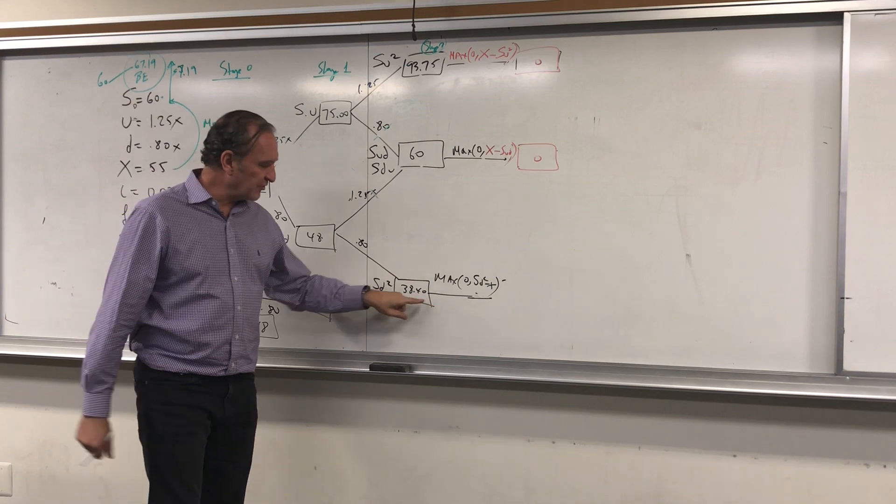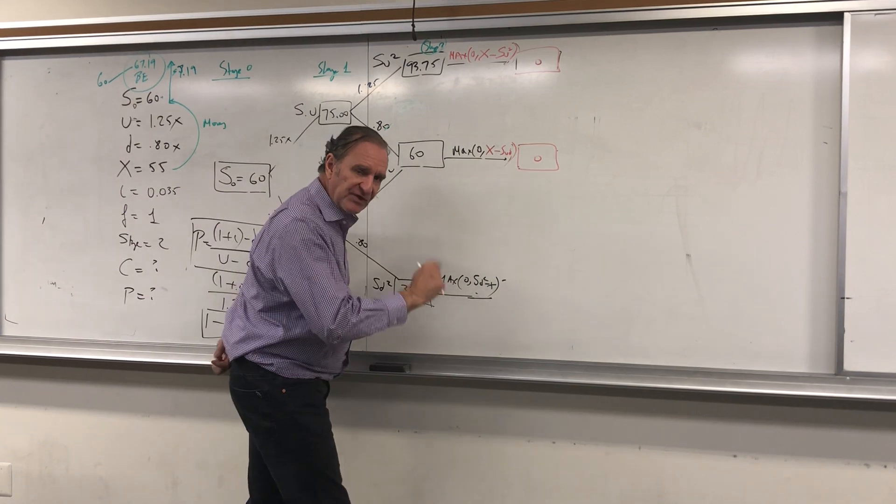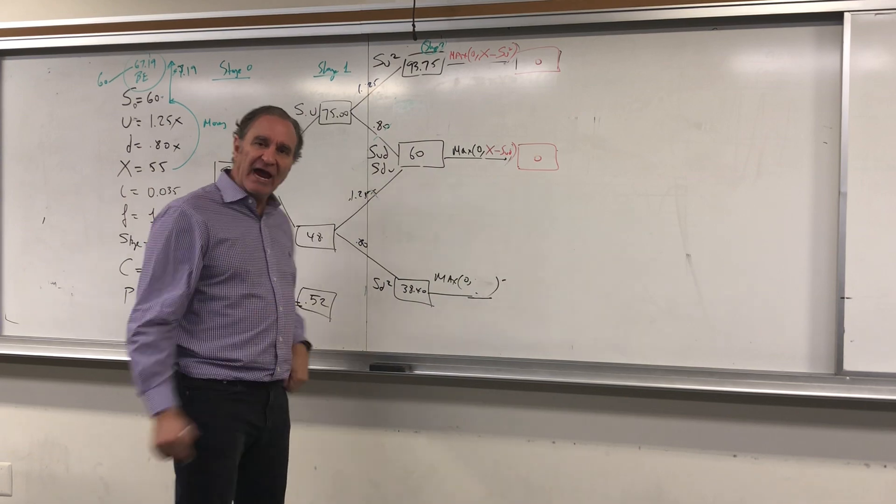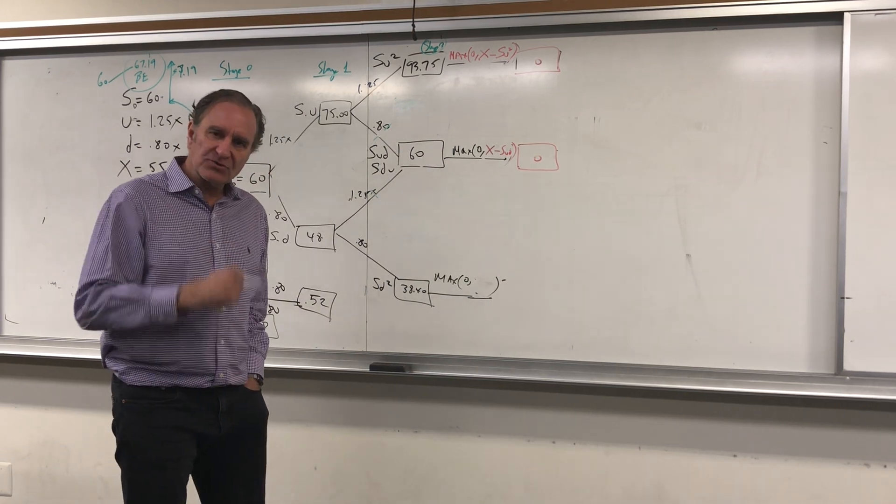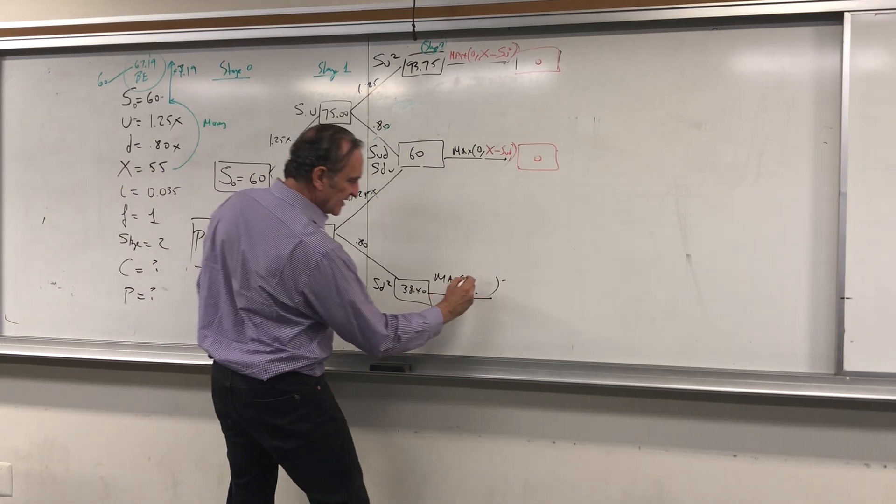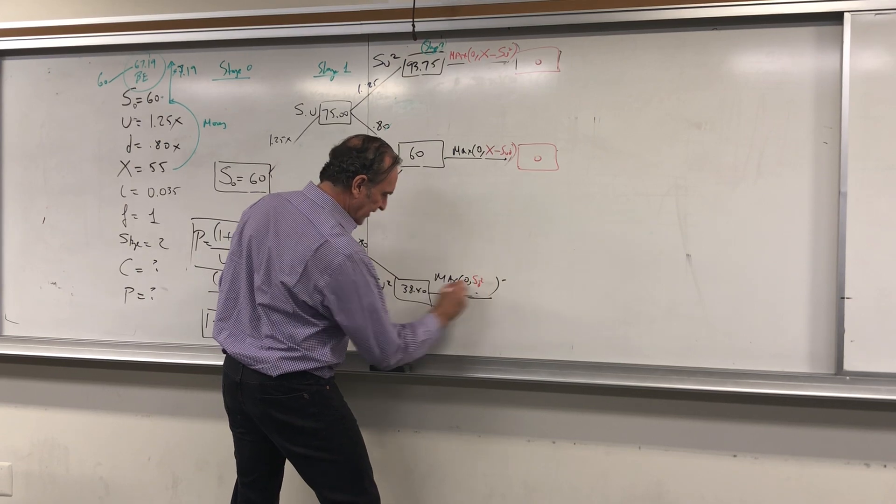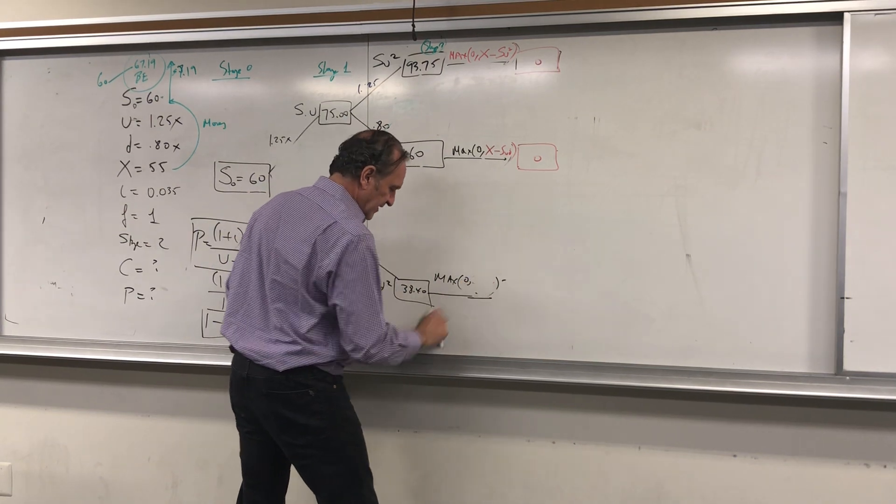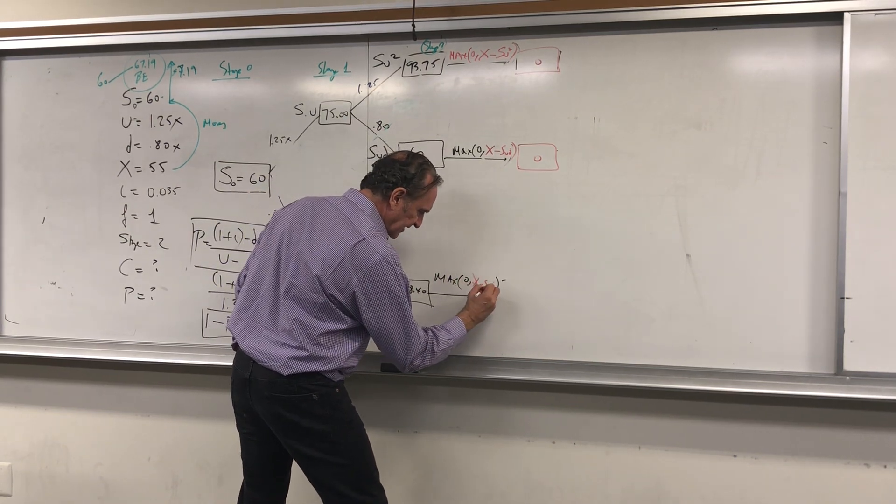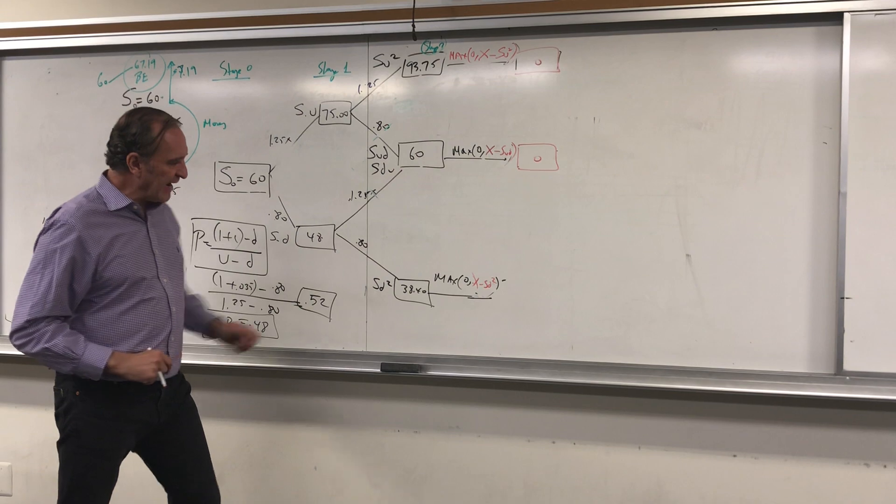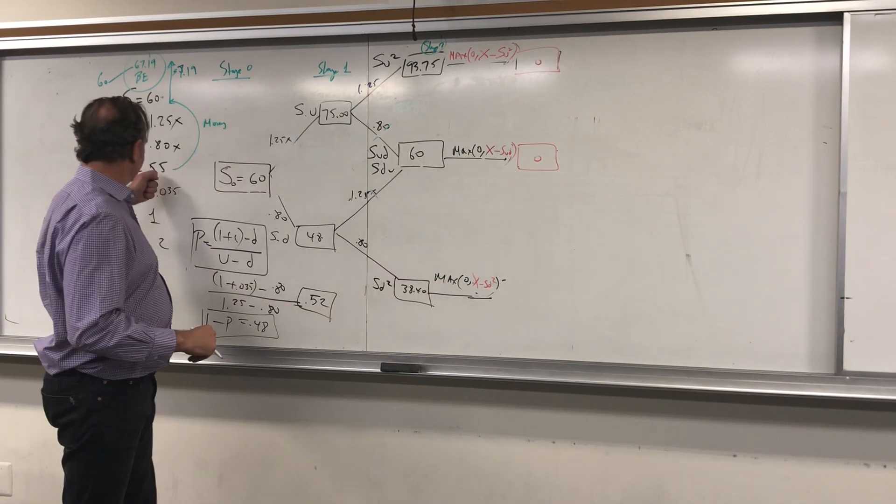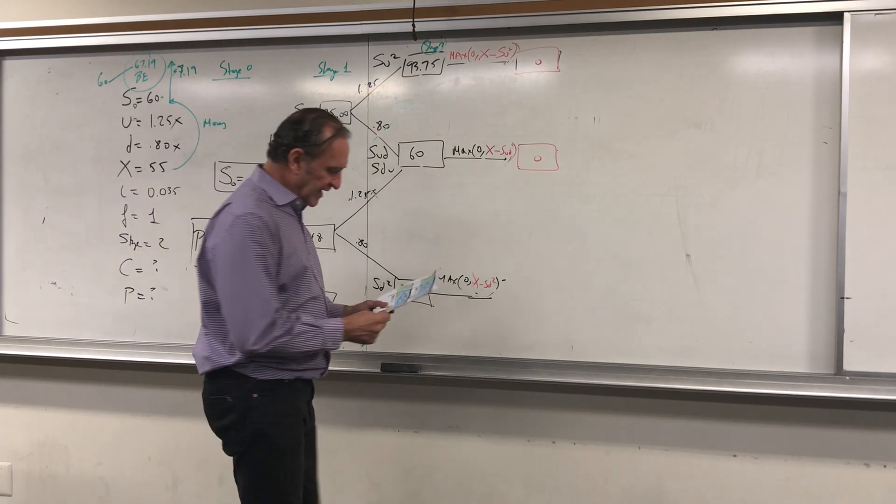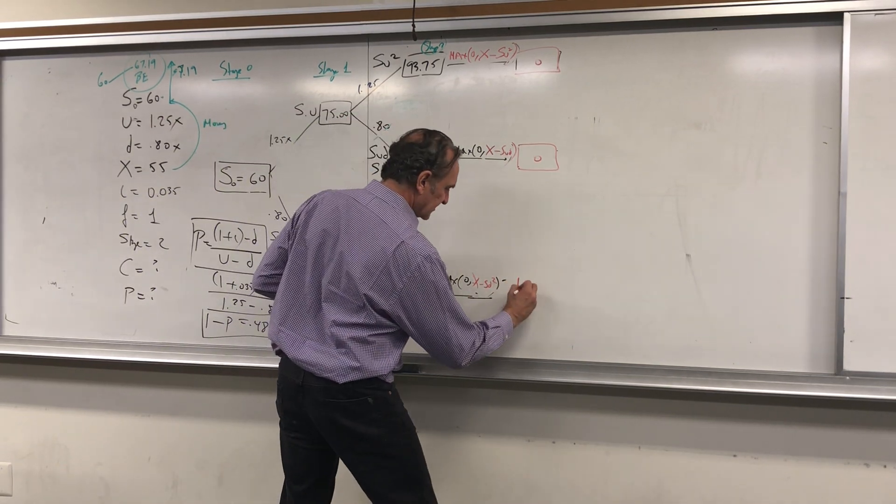Of course if it goes to 3840, that's a good thing for the put option guys because as predicted it went down. He was betting for the stock to go down. In this case it's going to be X minus sd². That's the payoff. Of course X is 55 minus 38.40, and we get 16.60.